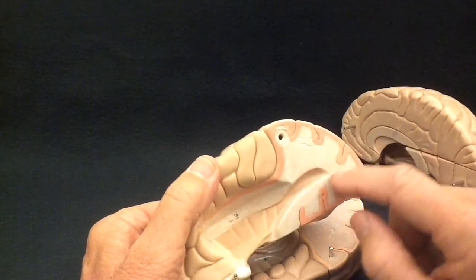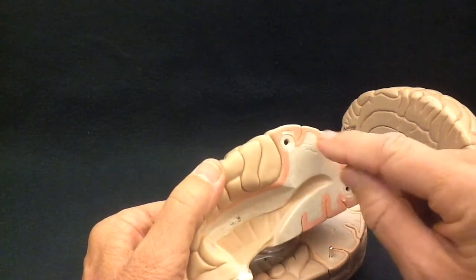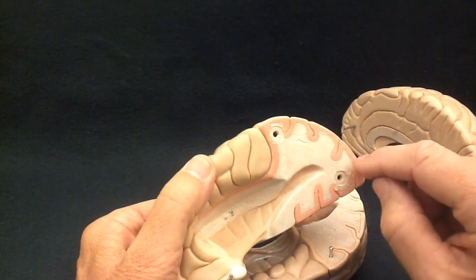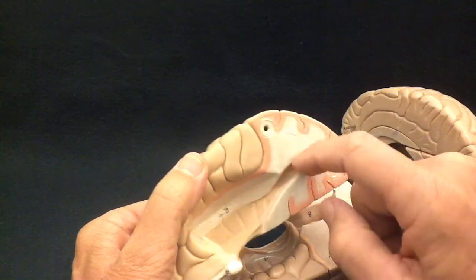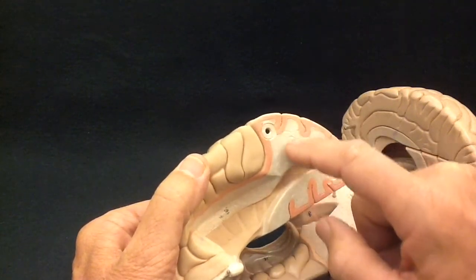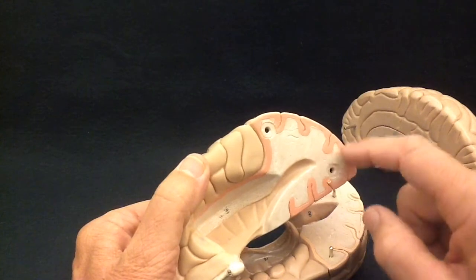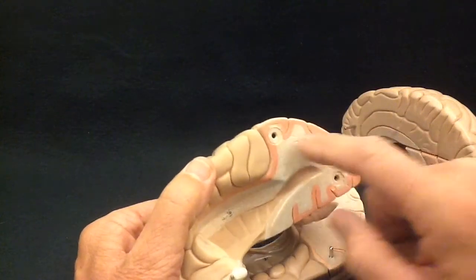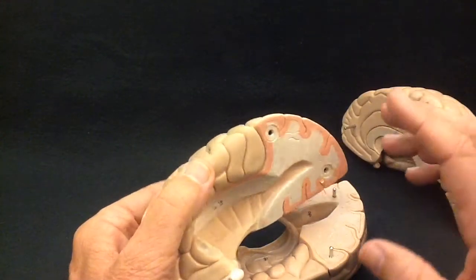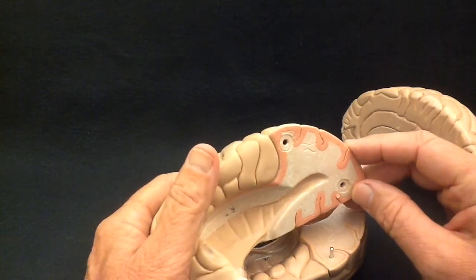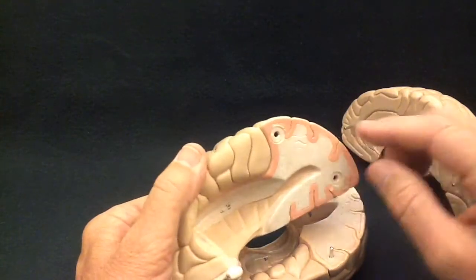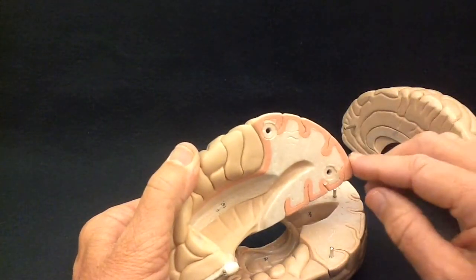The white matter is essentially the wiring of the brain. If this little area of gray matter needs to talk to this little area, we would find little wires, little bits of cytoplasm running from here to here so that this area can talk to this area and coordinate its activities and create this complex thing that we call thought. So you want to notice gray matter and white matter.